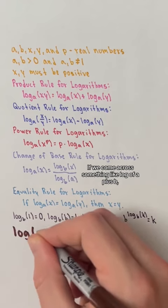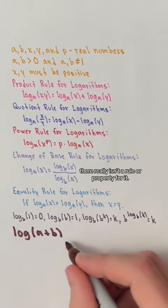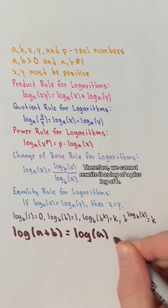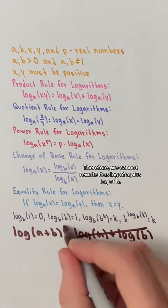If we come across something like log of a plus b, there really isn't a rule or property for it. It's as far as we can go. Therefore, we cannot rewrite it as log of a plus log of b.